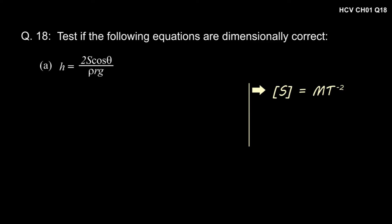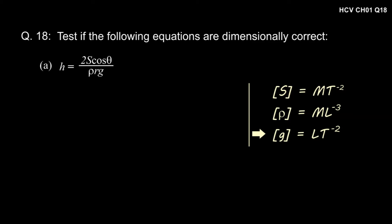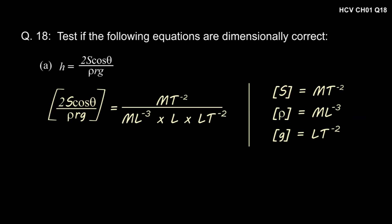In part A of the question, where H is equal to 2s cos theta divided by rho Rg, S is surface tension and the dimension of surface tension is MT to the power minus 2. Rho is density, that is mass by volume, and its dimension is ML to the power minus 3. G is acceleration due to gravity and its dimension is Lt to the power minus 2. Putting these values in the right-hand side, the dimension of 2s cos theta divided by rho Rg equals MT to the power minus 2 divided by ML to the power minus 3 into L into t to the power minus 2, which on simplification gives L — that is the dimension of H. Hence, the equation is dimensionally correct.